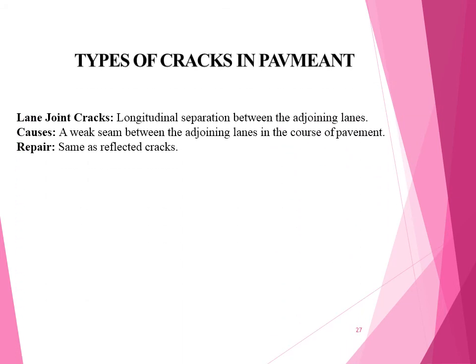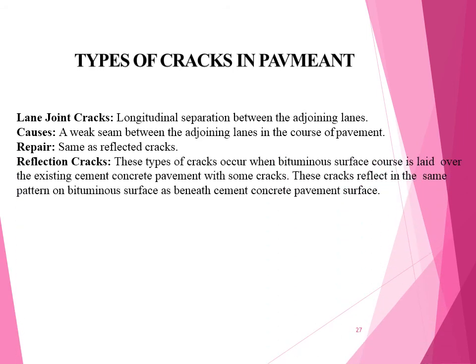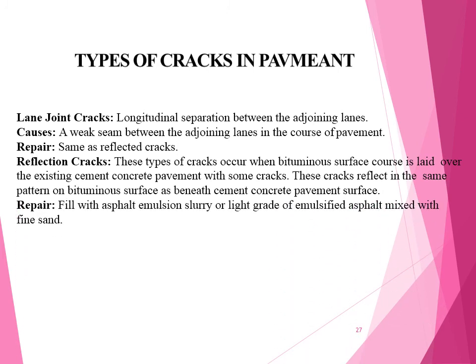Lane joint cracks are longitudinal separations between adjoining lanes, caused by a weak seam between the adjoining lanes in the course of pavement. Repair is the same as for reflection cracks. Reflection cracks occur when a bituminous surface course is laid over existing cement concrete pavement with existing cracks — these cracks reflect in the same pattern on the bituminous surface. Repair involves filling with asphalt emulsion slurry or a light grade of emulsified asphalt mixed with fine sand.